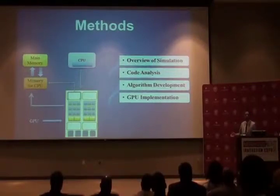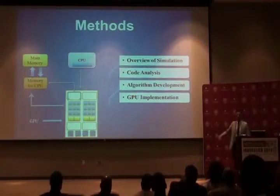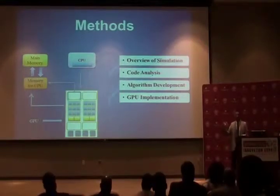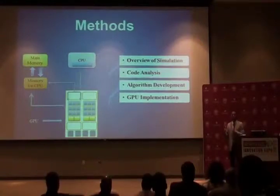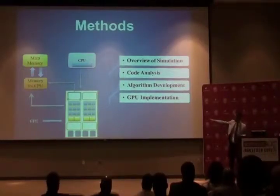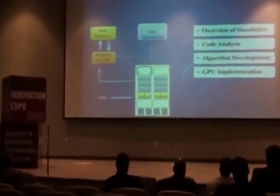After that I developed an algorithm and actually implemented the GPU. This is a physical model of what the GPU-CPU interaction looks like. The CPU has a large core processor but only one, so it can do complicated tasks but only one at a time. The GPU, in contrast, has many more core processors but they are much smaller.